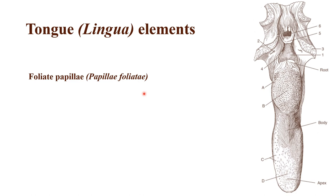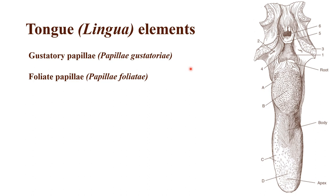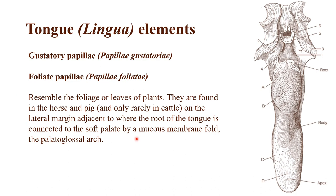Next up we have the foliate papillae, which is the first of the gustatory papillae that help taste the feed. Animals don't have the same taste buds as we do — some are better at picking up sour taste, some sweet, some salty. We'll talk about that in the next video. These papillae represent leaves or plants and can be found in horses and pigs, but barely ever in cattle.